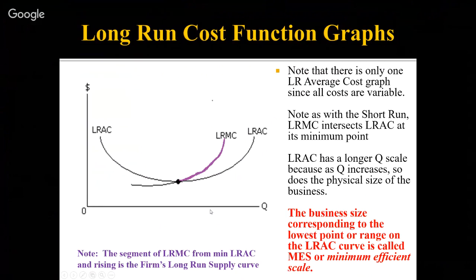When we learned about short and long run, we talked about the fact that in the short run, the scale of operation or physical size is fixed. But in the long run, the scale of operation or physical size is variable. So when quantity of output gets bigger in the long run, you get a bigger size business, and less output means a smaller size business — a lot more flexibility in the long run.